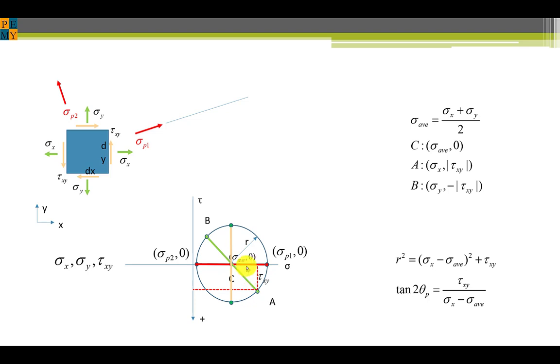The angle of rotation to get from the stress element to the principal stress is another angle here. On Mohr's Circle that angle is 2 theta and the formula for the tangent of an angle allows us to use the arctan to find 2 theta which can be divided by 2 to find theta.